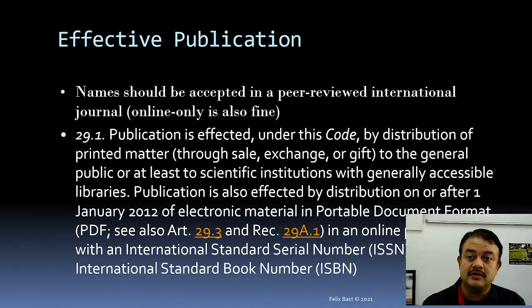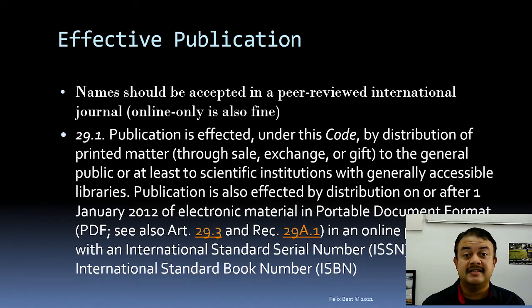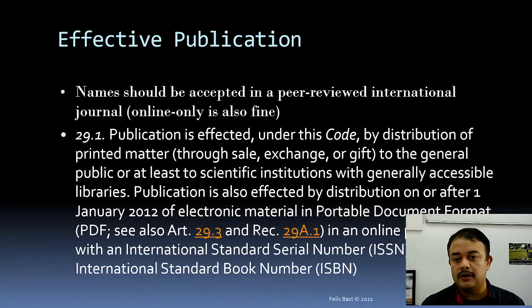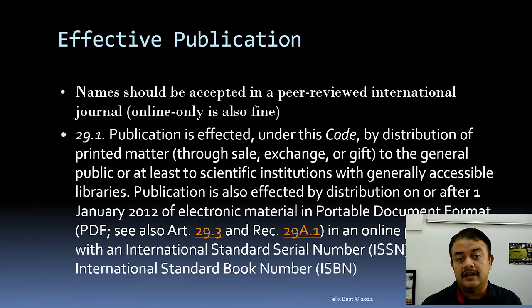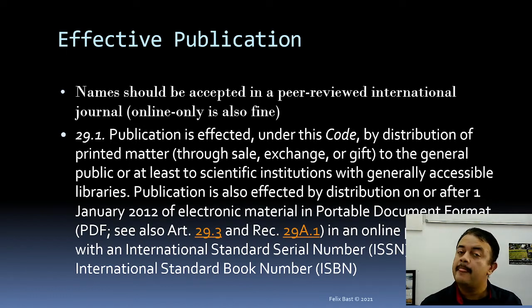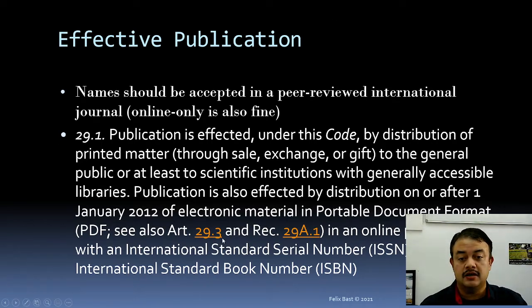One commonly used term is 'effective publication.' If you describe a new species and publish it in your MSc thesis, is it effective? According to rule 29.1, an effective publication of the ICN name should be accepted in a peer-reviewed journal. An online-only journal is also fine; the PDF should be freely available, or purchasable — both count. Check out rules 29.1, 29.3, and A1.